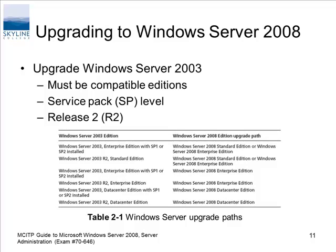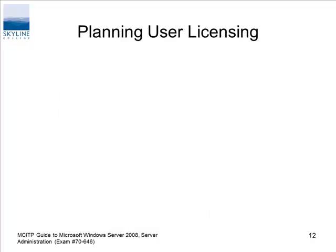Upgrading — this table is in the book. Take a look at it. It goes through the 2003 to 2008 upgrade paths. Basically it's enterprise-to-enterprise or from a lower to a higher version.